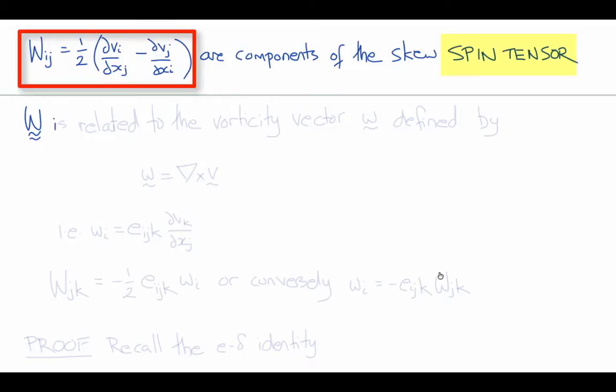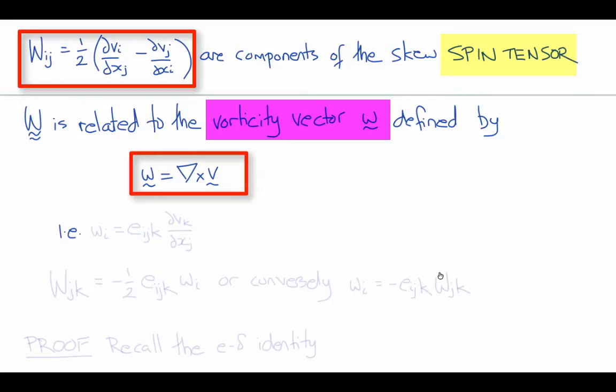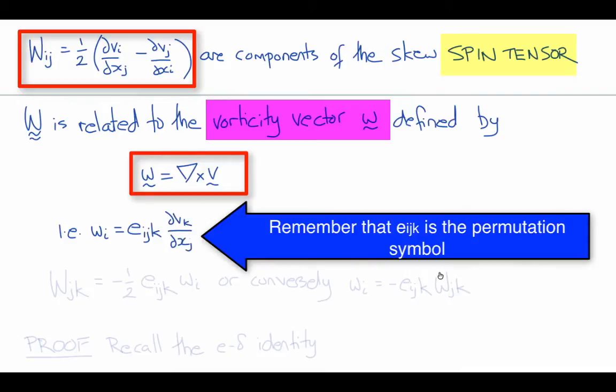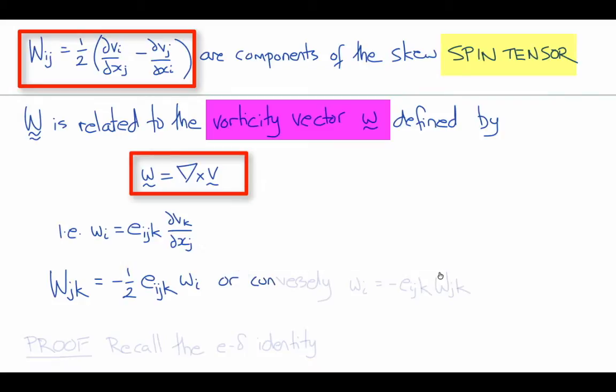The spin tensor W is related to another useful quantity called the vorticity vector, lowercase w, which is defined by the curl of the velocity vector. So w is equal to curl v, or in index notation, wi equals Eijk del vk del xj. And so we can show that the spin tensor, capital Wjk, its components are related to the vorticity vector by minus one-half Eijk little wi, and the inverse of that relation is little wi equals minus Eijk capital Wjk.